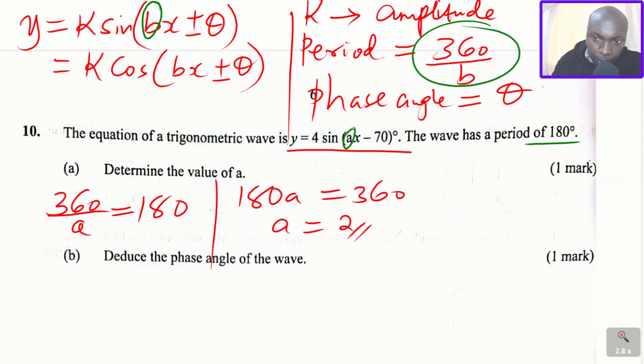So that is how we get the value of A. Now deduce the phase angle of the wave. So look at the two equations that I indicated here. Looking at those equations and comparing what you have here, the phase angle is very easy to identify. So the phase angle is what we have here, where we have 70.